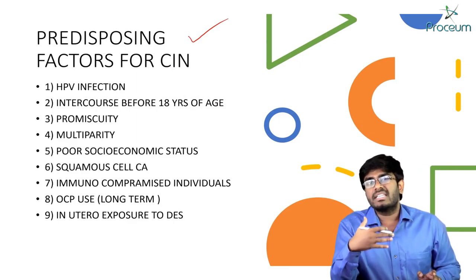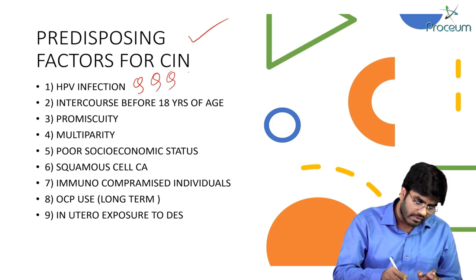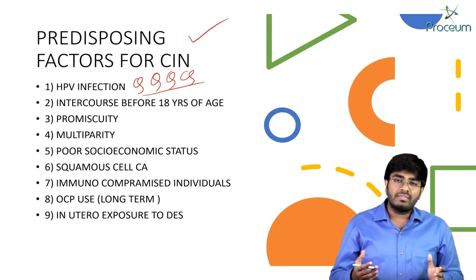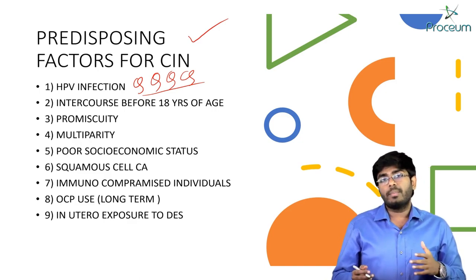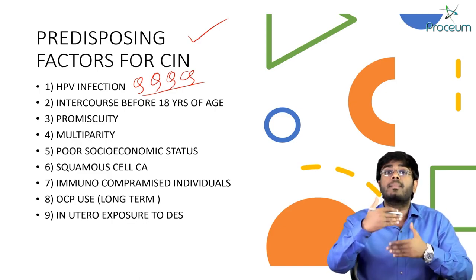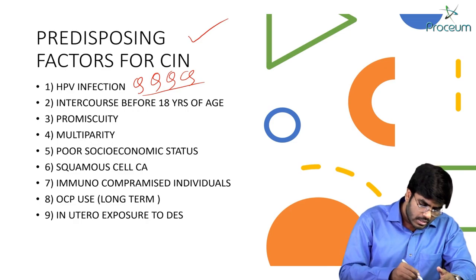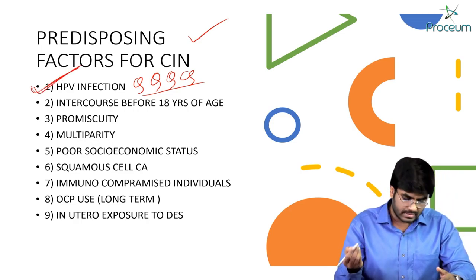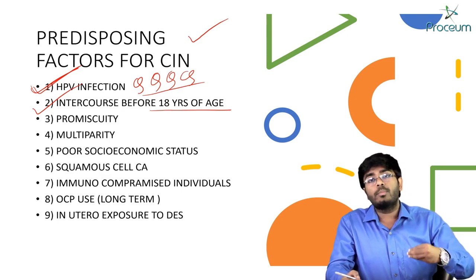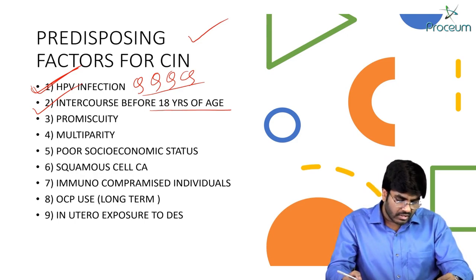Now let's see the predisposing factors for CIN. The single most important agent is HPV infection — human papillomavirus — which is an STD. If a female has multiple sexual partners, she is at high risk. Intercourse before 18 years of age is also a high-risk factor because the transformation zone is more likely to be outside at that age, making it easily affected by HPV.